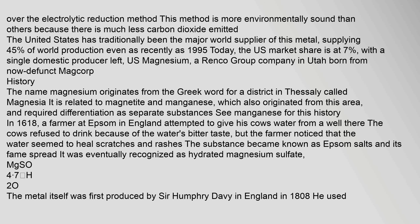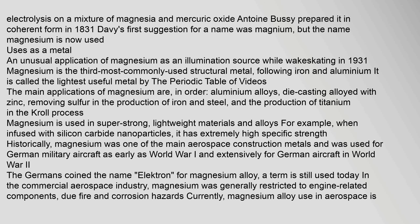The name magnesium originates from the Greek word for a district in Thessaly called Magnesia. It is related to magnetite and manganese, which also originated from this area. In 1618, a farmer at Epsom in England attempted to give his cows water from a well; the cows refused to drink because of the water's bitter taste, but the farmer noticed that the water seemed to heal scratches and rashes. The substance became known as Epsom salts and was eventually recognized as hydrated magnesium sulfate, MgSO₄·7H₂O. The metal itself was first produced by Sir Humphrey Davy in England in 1808 using electrolysis on a mixture of magnesia and mercuric oxide. Antoine Bussy prepared it in coherent form in 1831.